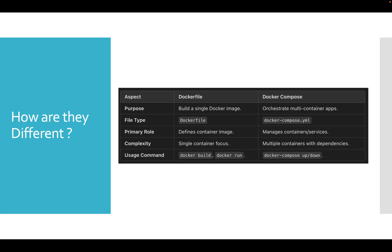A Dockerfile is used to create a Docker image; Docker Compose is used to run instances of that image. Dockerfile builds a single Docker image, while Docker Compose orchestrates multi-container apps using a docker-compose.yml file. Dockerfile defines what is inside the container image — which packages are included — while Docker Compose defines how it is going to run. Dockerfile focuses on a single container; Docker Compose focuses on multiple containers with their dependencies. The relevant commands are docker build and docker run for Dockerfile, and docker compose up or down for Docker Compose.